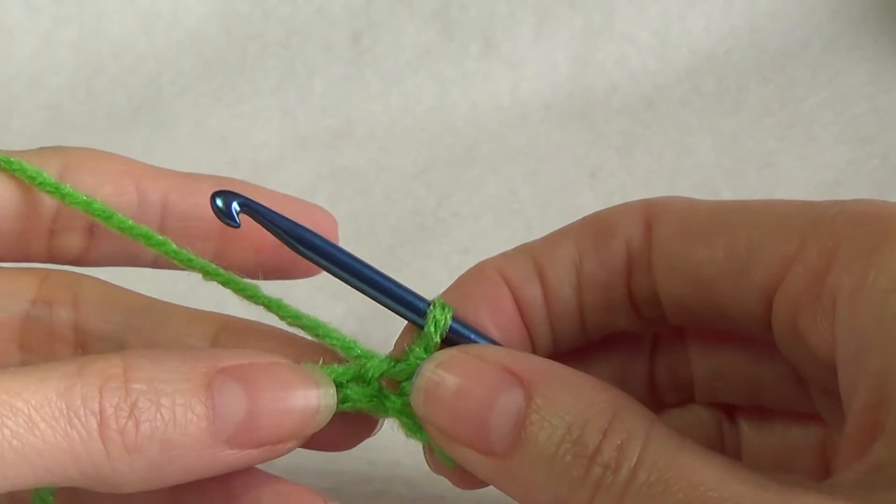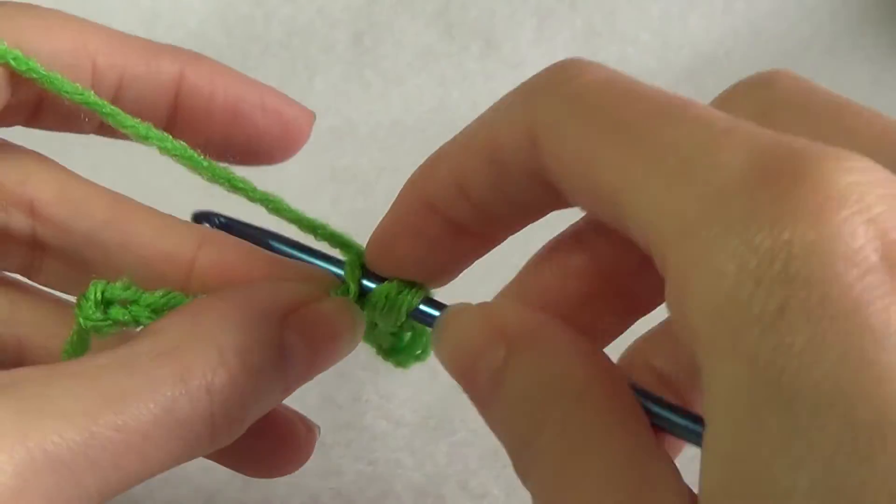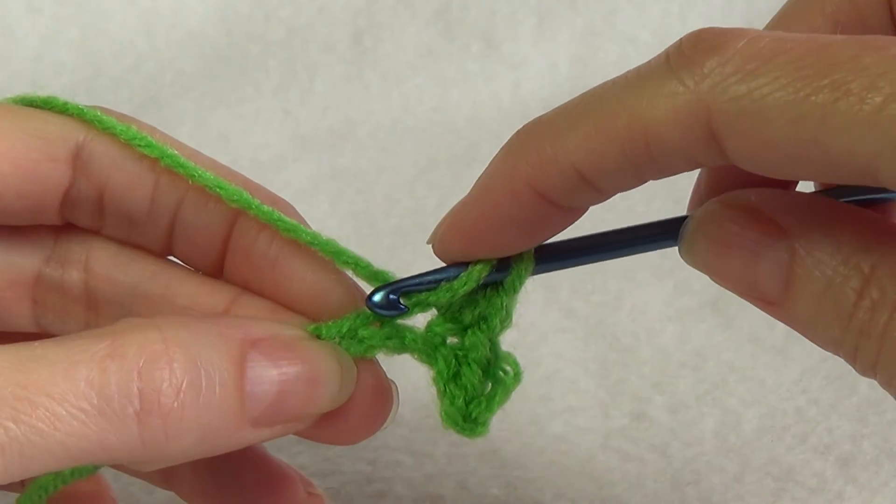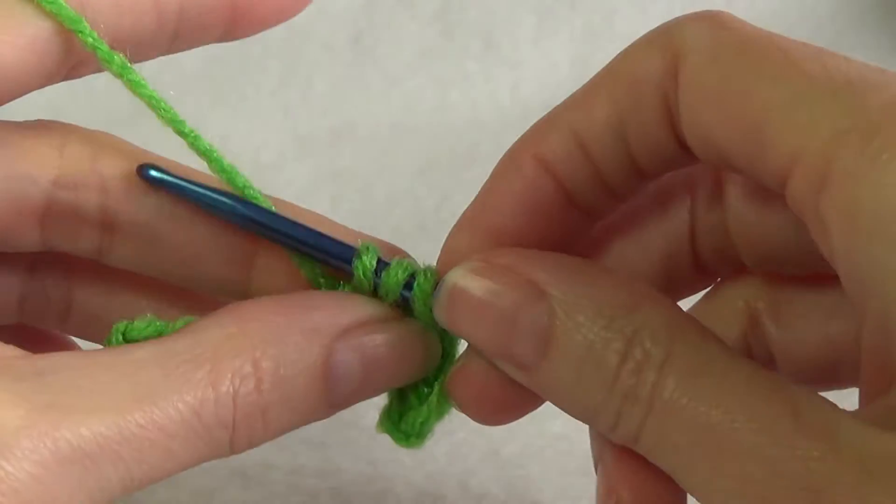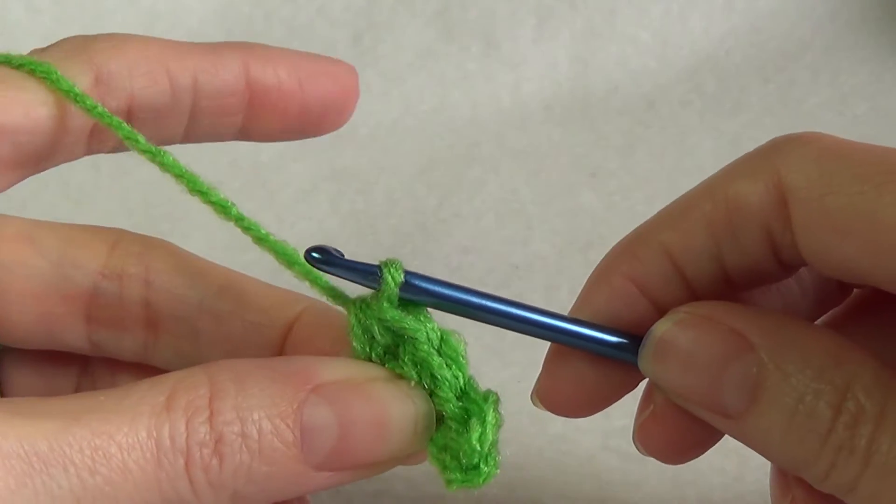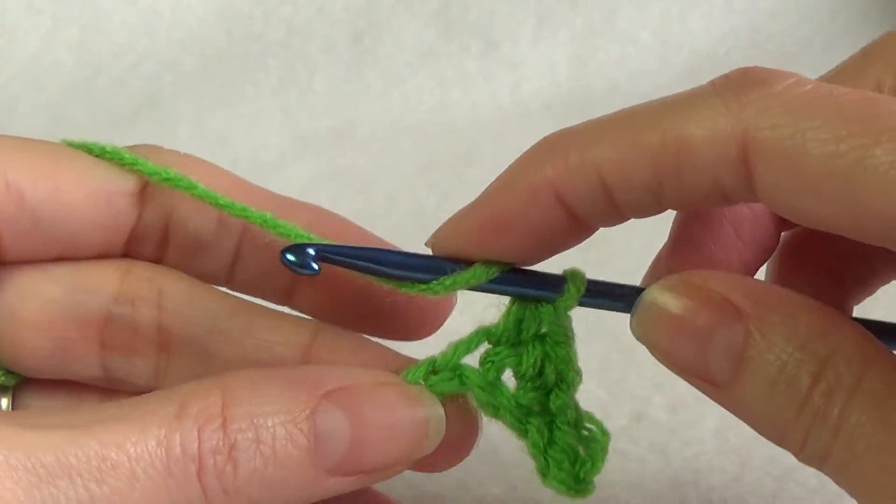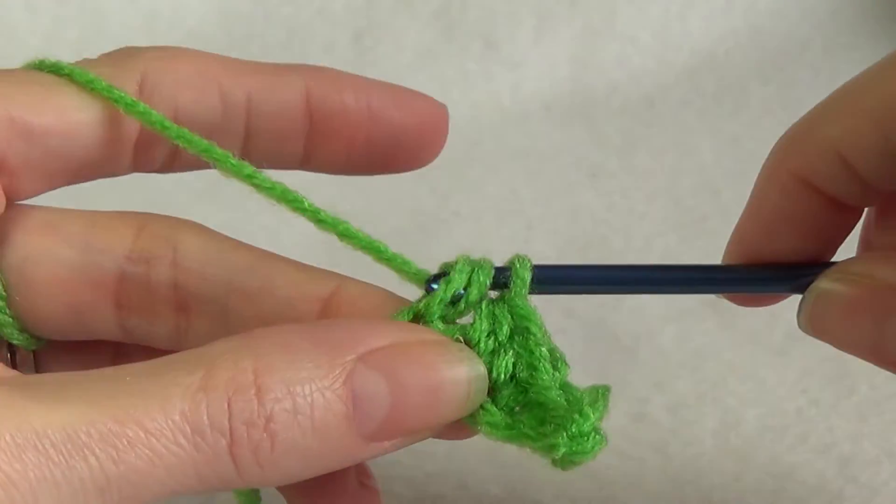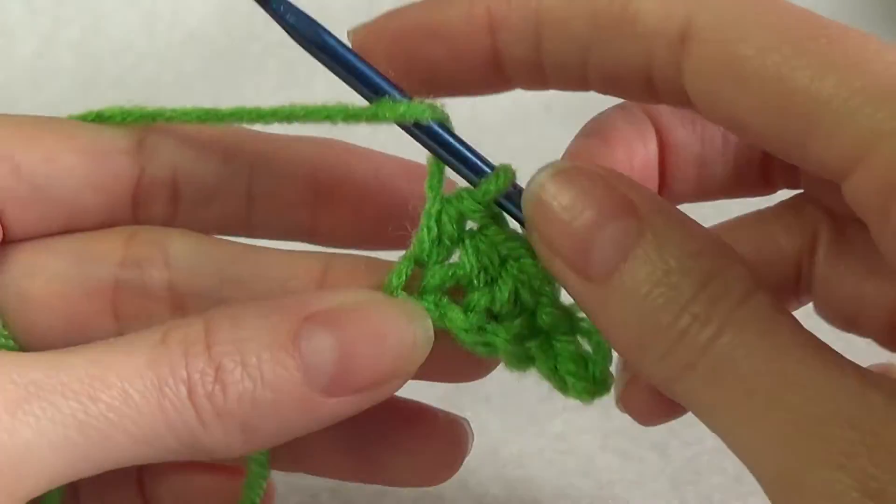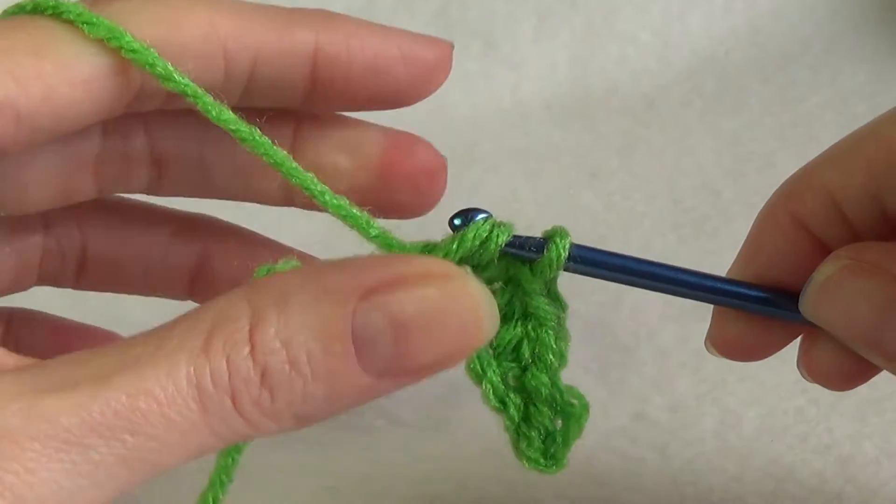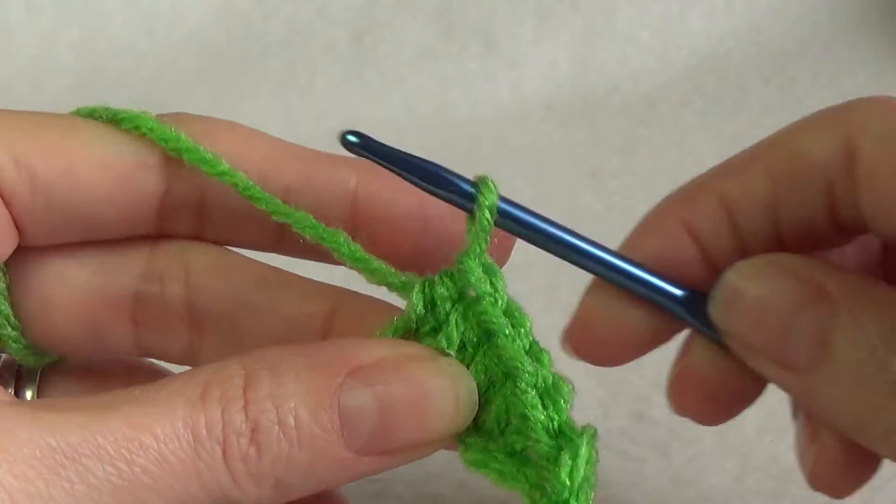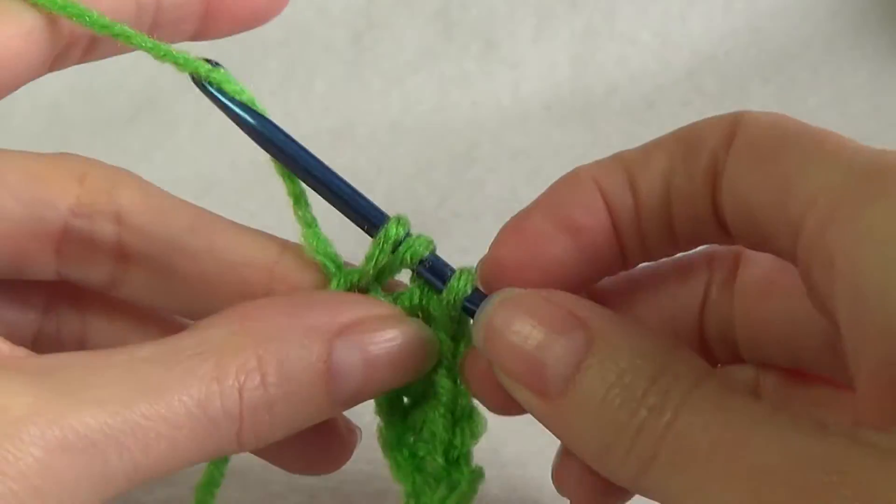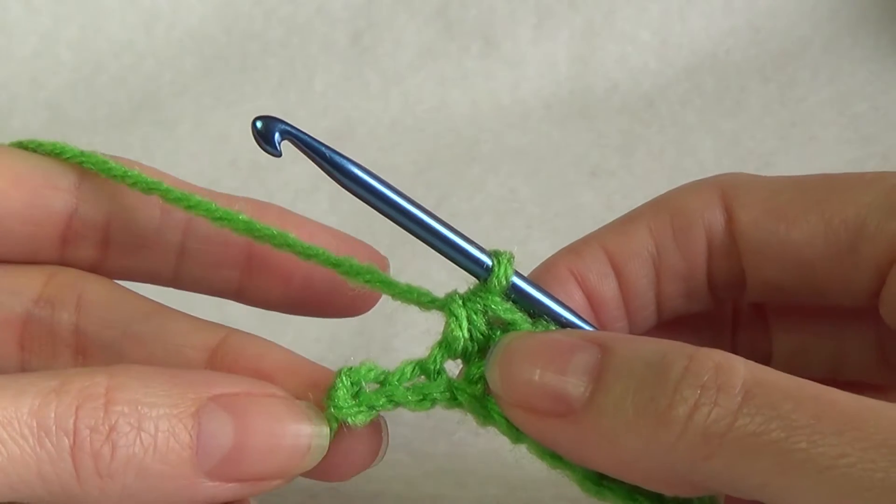We're going to single crochet into the next one and then single crochet into the next one. We're going to half double crochet, so that's wrapping our yarn, into the next chain. Half double crochet into the next chain and half double crochet into the next chain.